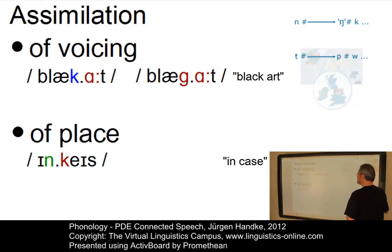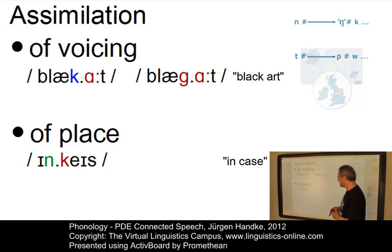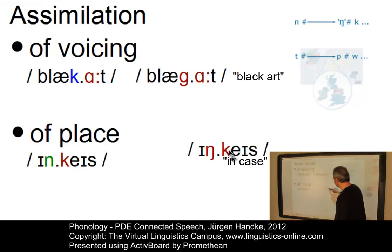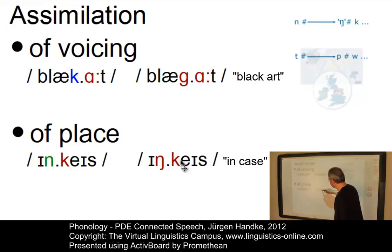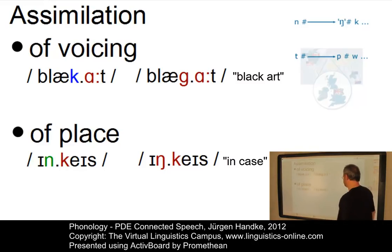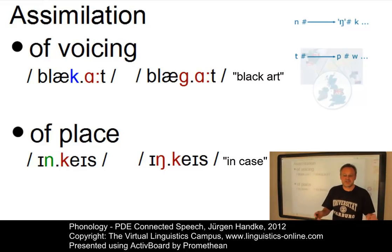Take the next example — the assimilation of the place of articulation. In the construction 'in case', the final alveolar nasal might become a velar nasal under the influence of the velar plosive of 'case'. So 'in case' becomes 'in case'.